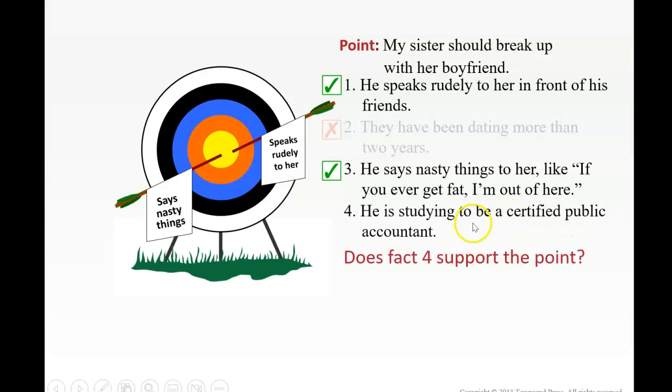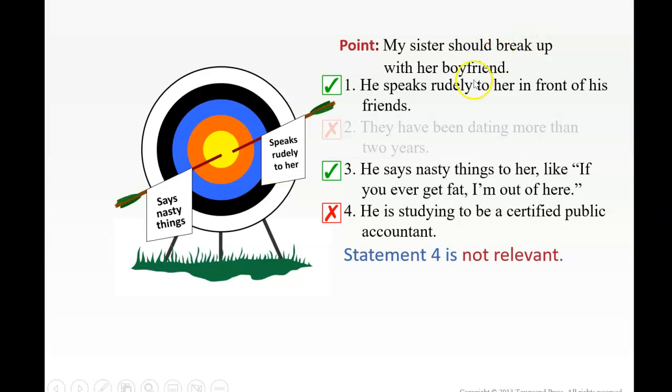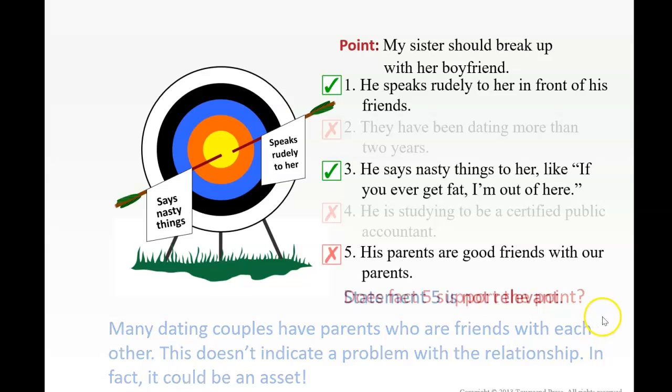He is studying to be a certified public accountant. Okay, to me this is off topic. It's not saying why she should break up with him. Now if the author were to say he's studying to be a certified public accountant and ignores her, or doesn't devote time to her anymore, or is so obsessed with it that he's neglecting his girlfriend, which is your sister, well then I think that would be relevant. But the way it is here, it's not relevant. It's off topic, has nothing to do with breaking up, why she should break up, unless again we added more information to it. His parents are good friends with our parents. Is that a reason to break up? I don't think so. I think it's off topic.